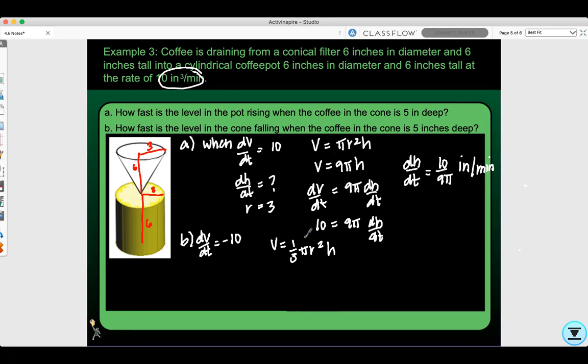We need a formula for how it's changing. The radius to height ratio is 3/6 equals r/h, or r equals h/2. They want us to find dh/dt when h equals 5. So the volume equation is 1/3 π (h/2)² h, or V equals 1/12 πh³.